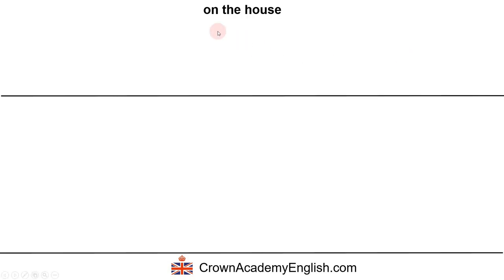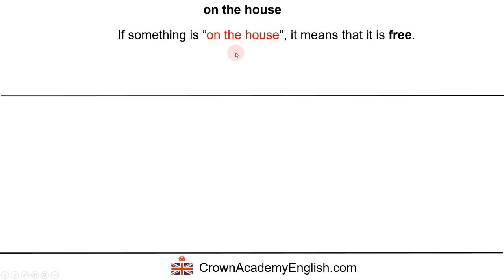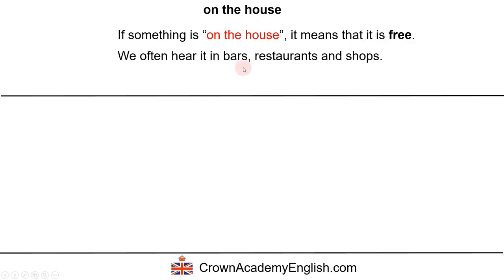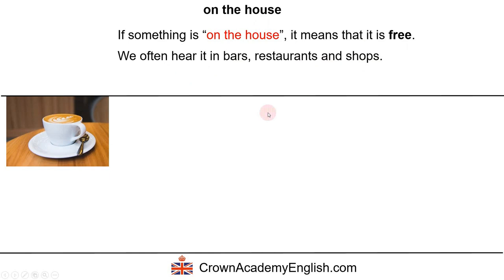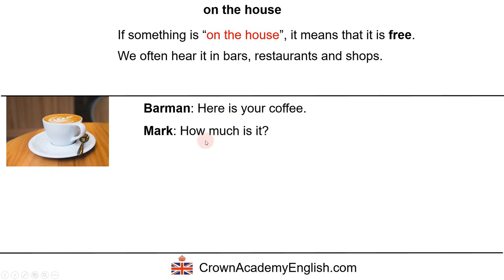The first expression is 'on the house,' and this means that something is free — it's a gift, you don't have to pay for it. We often hear this expression in bars, restaurants, and shops. For example, the barman says 'Here is your coffee,' Mark asks how much it is, and the barman replies 'It's on the house' — meaning it's a gift, it's free, the bar is paying for the coffee.